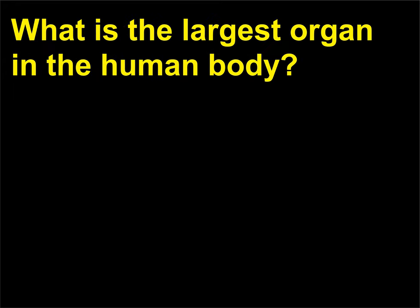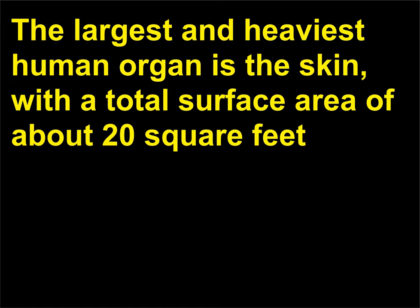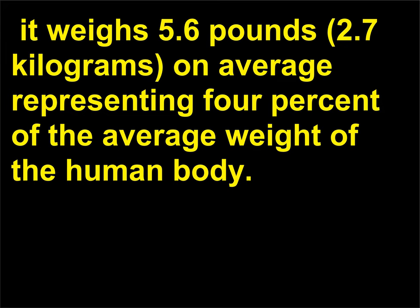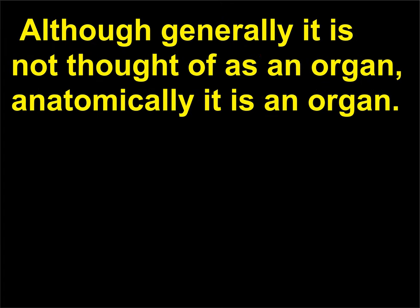What is the largest organ in the human body? The largest and heaviest human organ is the skin, with a total surface area of about 20 square feet (1.9 square meters) for an average person, or 25 square feet (2.3 square meters) for a large person. It weighs 5.6 pounds (2.7 kilograms) on average, representing 4% of the average weight of the human body. Although generally not thought of as an organ, anatomically it is one.